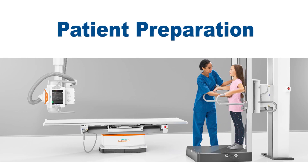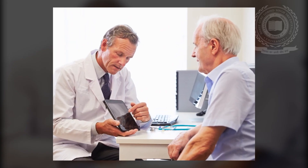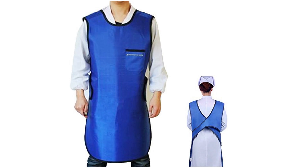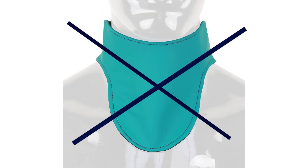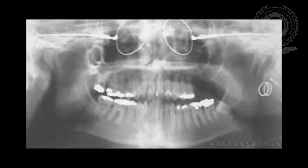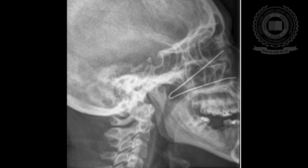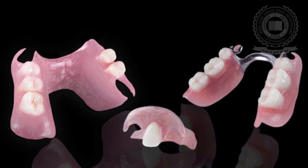The next step is patient preparation. It is very important that the whole procedure is explained to the patient beforehand. The patient should be placed with a lead apron, and a thyroid collar should not be used as it might interfere with the projection or the shadow might cast on the film. The patient should be asked to remove any earrings, eyeglasses, necklaces, hearing aids, hairpins, complete dentures, or removable partial dentures.